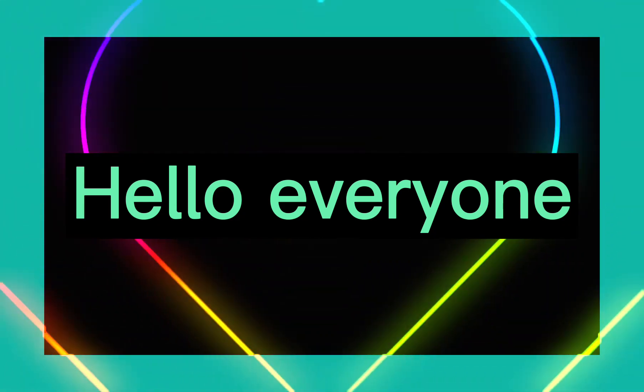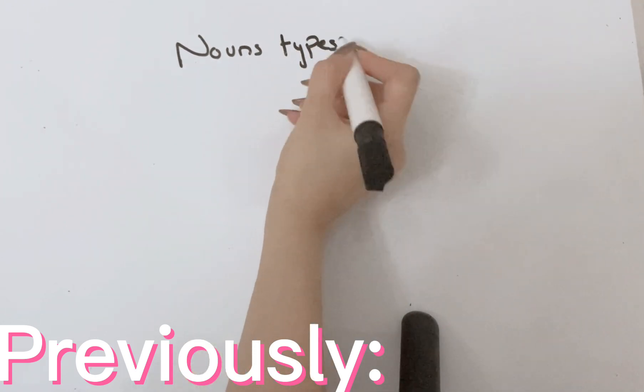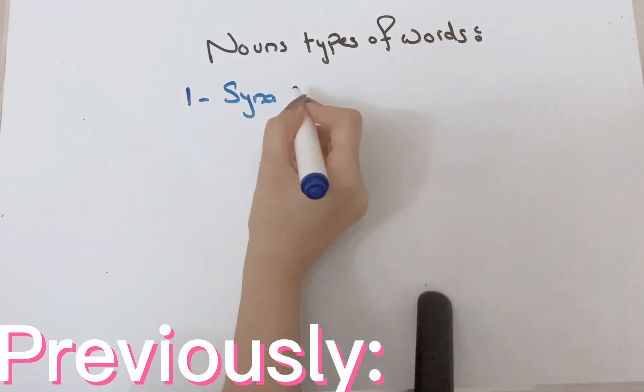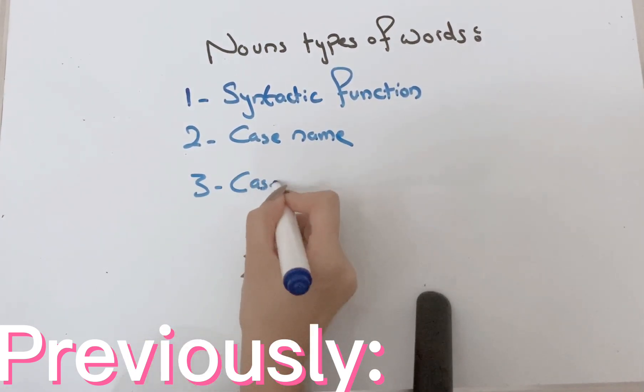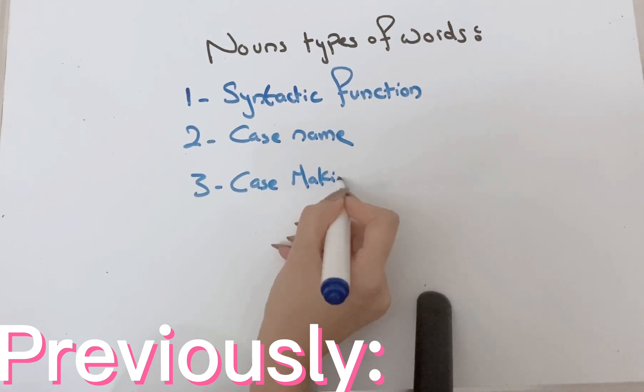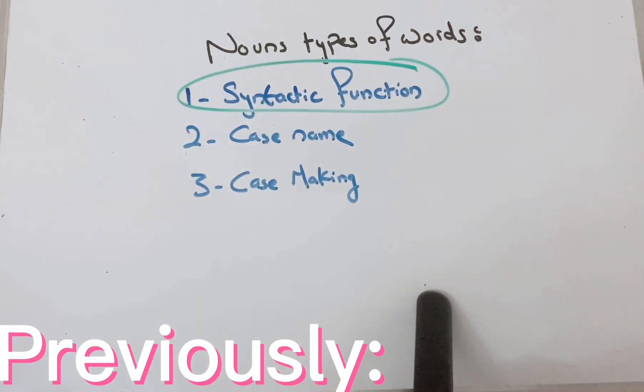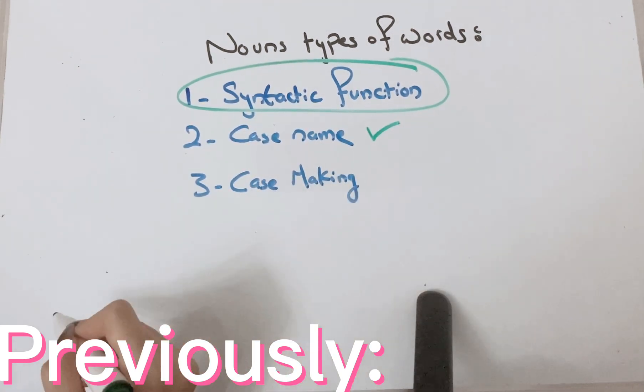Hey all, hope you all are doing great. In my previous video we talked about the noun type of words which are the syntactic function, case name, and case making. We already covered the syntactic function. If you haven't watched this video then please go ahead and watch it now because today's video we will be covering the case name.